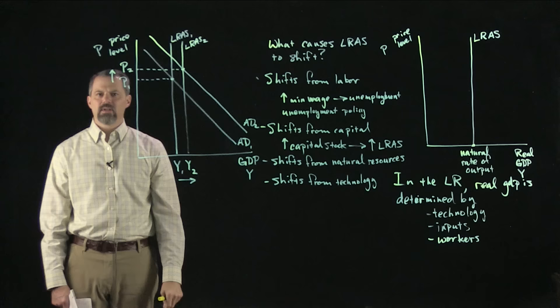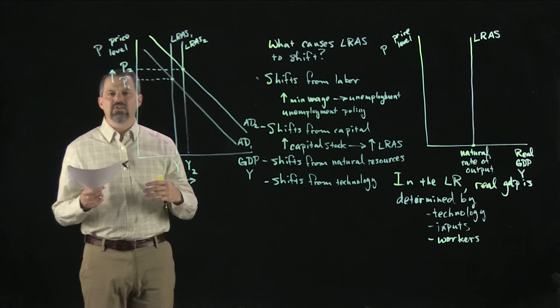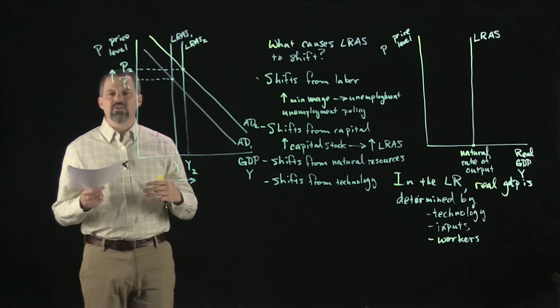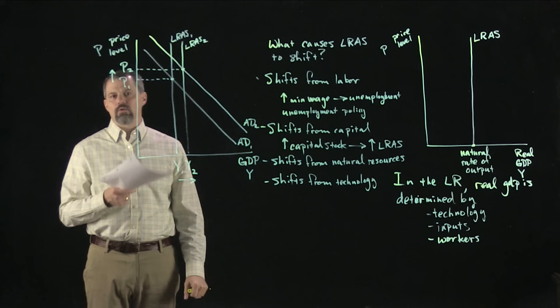We can use this model to understand the sources: monetary policy shifts aggregate demand, and changes in technology shift long-run aggregate supply. What we need to do now is look at short-run aggregate supply — then we'll be able to see what causes short-run fluctuations in the economy.